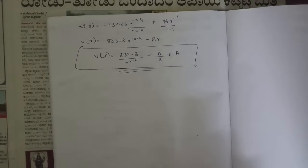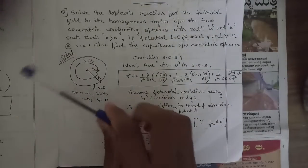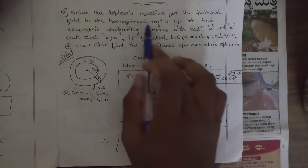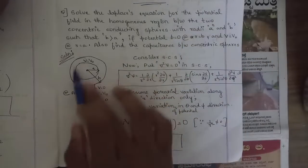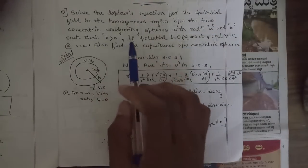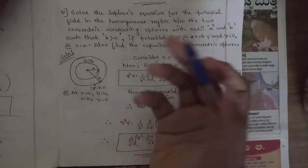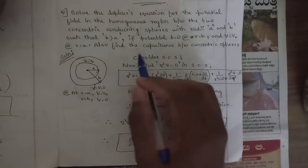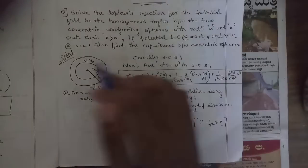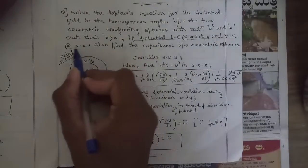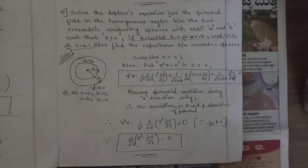Now for the second problem: solve the Laplace equation for the potential field in a homogeneous region between two concentric conducting spheres with radii a and b, where b > a. The boundary conditions are V = 0 at r = b and V = V₀ at r = a. We need to find the capacitance between these two concentric spheres.